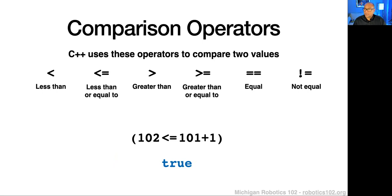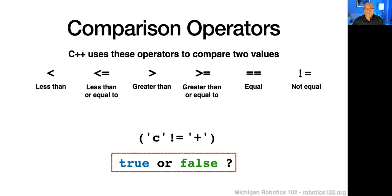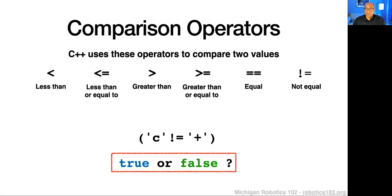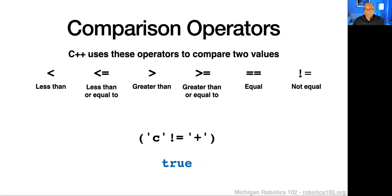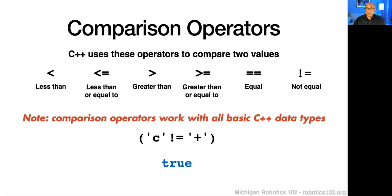How about something a little different — not just numbers. Is the character 'C' not equal to the character for the plus sign? In this case, that would be true. We know these aren't the same. These comparison operators work with all basic C++ data types — it's not just numbers. It can get complicated when thinking about non-numeric types and less-than comparisons, but they will work and will evaluate to either true or false.